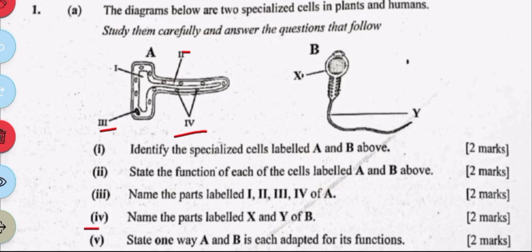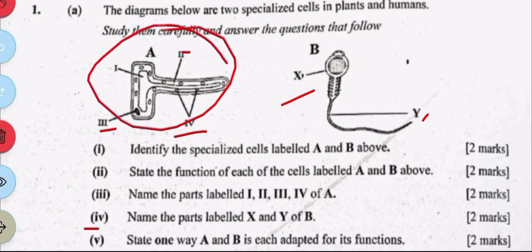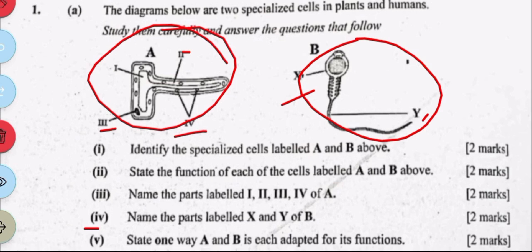Part iv asks us to label the parts of cell B. X is the head and Y is the tail. Lastly, state one way each of A and B is adapted to its function. A is very thin, which helps allow water and nutrients to penetrate. B is streamlined to be able to swim, and it also has a tail to swim towards the egg.